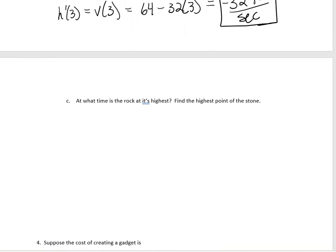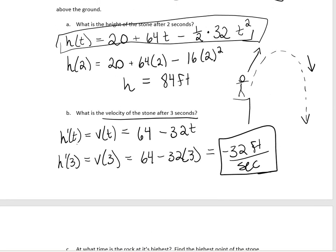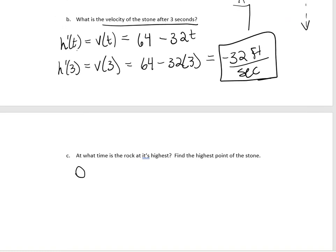To find when the rock is at its highest, we look at the vertex of the parabola, where the tangent line equals zero. So we want to find when the velocity equals zero: 0 = 64 − 32t. Solving for t gives us t = 2 seconds — two seconds after the rock is thrown, it's at its highest.